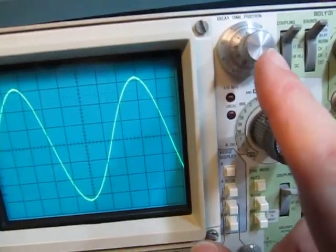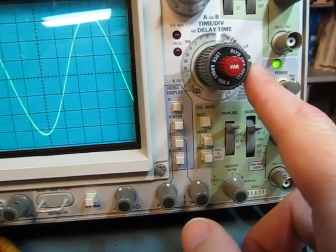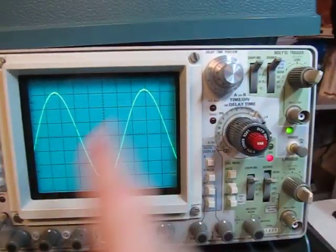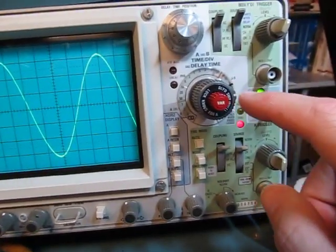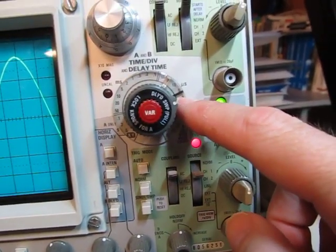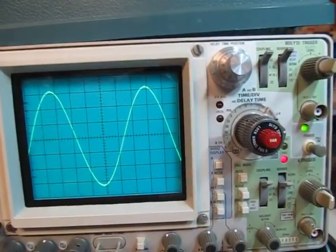So the delay time base controls essentially when the B time base starts. A lot of times that's used, and I've had some other videos on how to use the delay time base and the delay to move around, but if we leave the A and B time bases lined up with each other, we could just use the delay to make a delayed measurement.